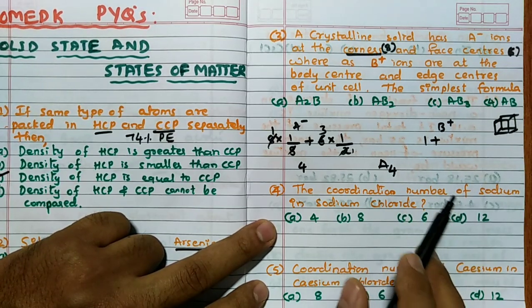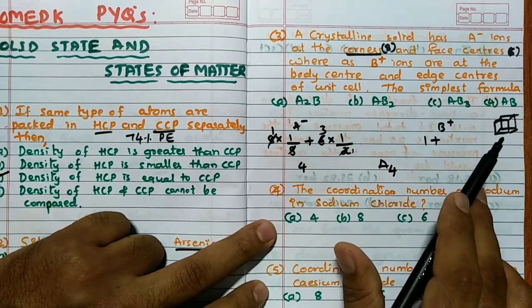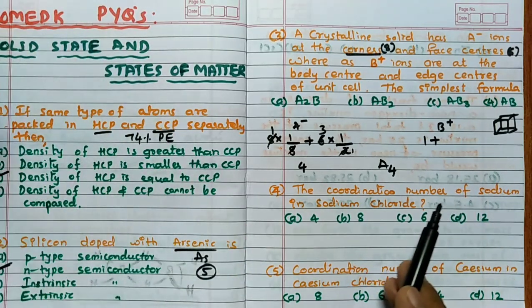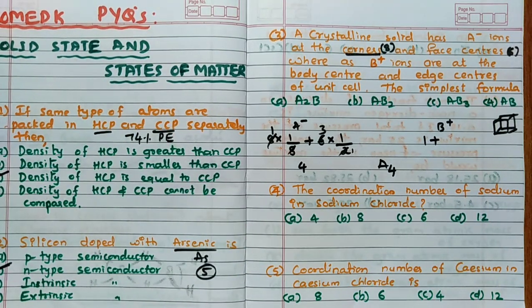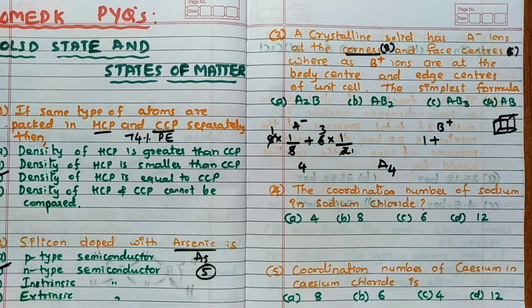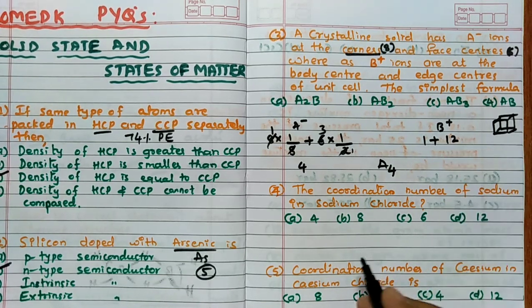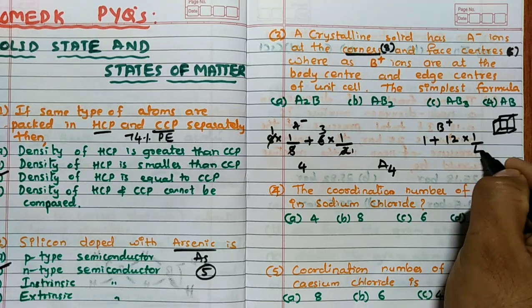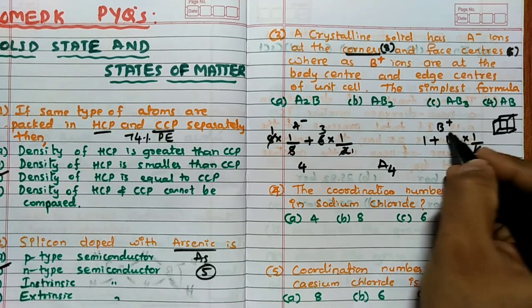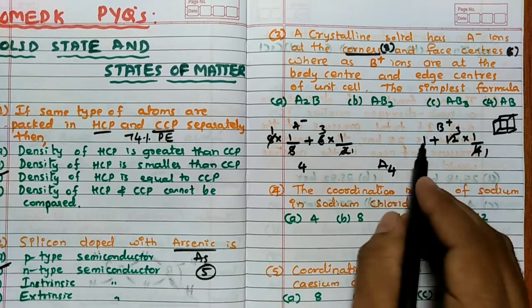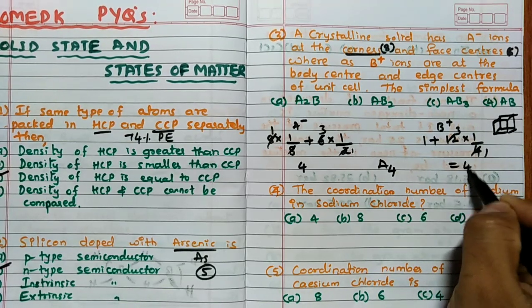So 12 lines, each edge, the line which can be shared by 4 unit cells at a time. Hence total edges are 12 into 1/4, so 4 ones are 4, 3 is 12, 3 plus 1, this is also 4.